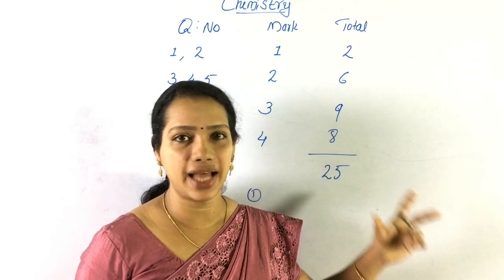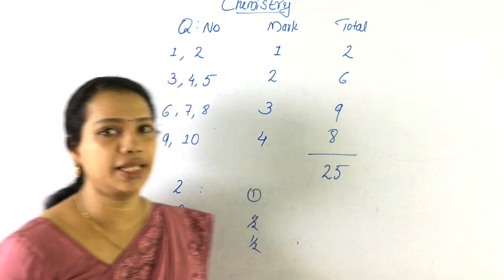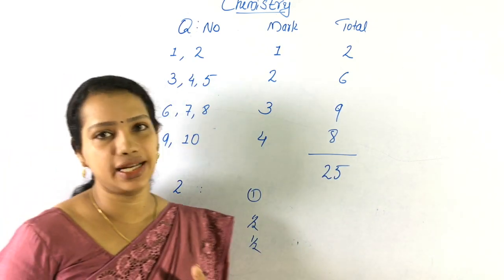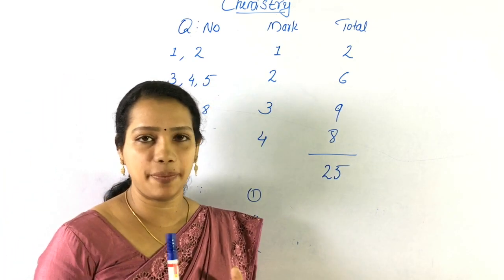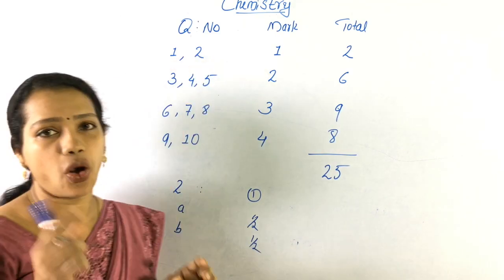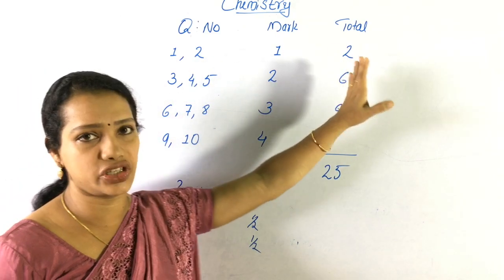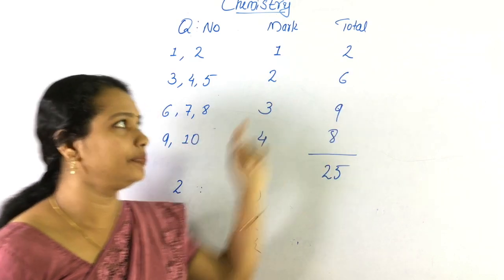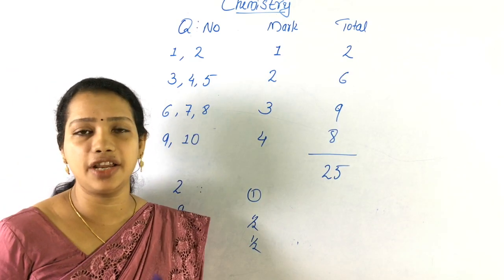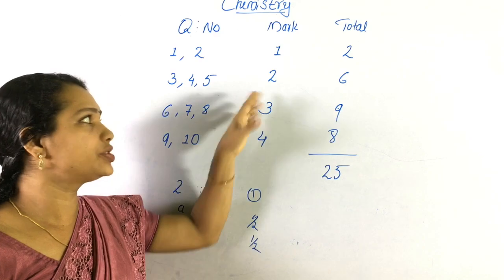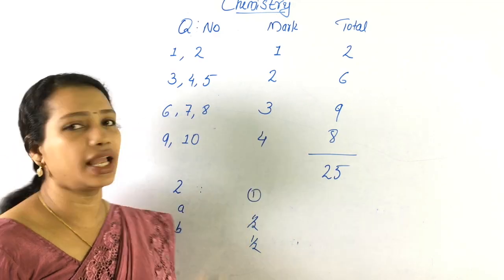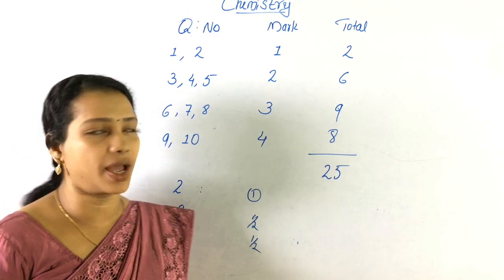Let's see where we are going to mark the questions. We have to know there are 10 questions. We have to know that 2 questions are 1 mark each in that section. We have to know 3 questions: question number 3, 4, 5 — 1 question is 2 marks. That section is 6 marks total.